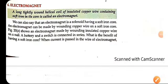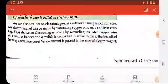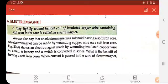Welcome students, so today we are going to start our next topic that is electromagnet. What is electromagnet? It is simply a copper wire that is wrapped in a helical way in the spring shape. It is a long tightly wound helical coil of insulated copper wire containing soft iron core.